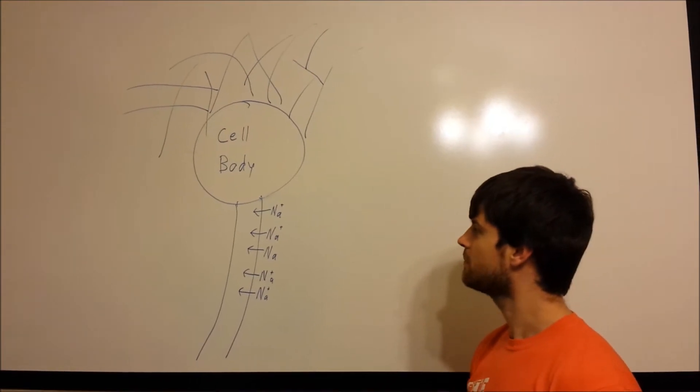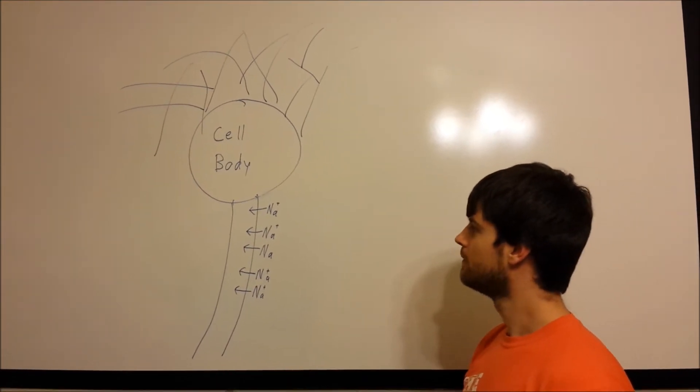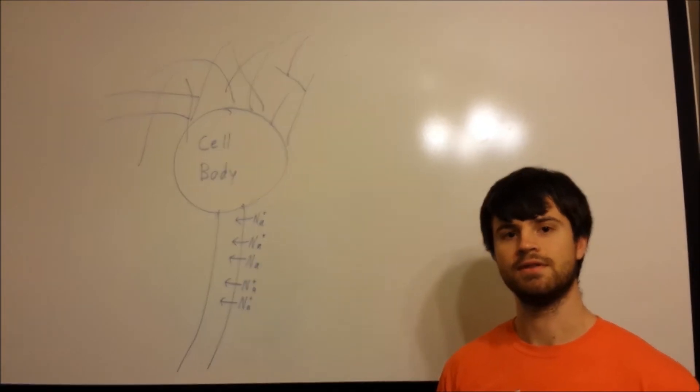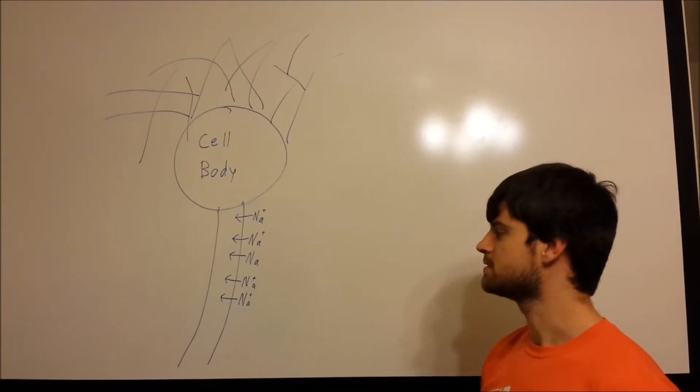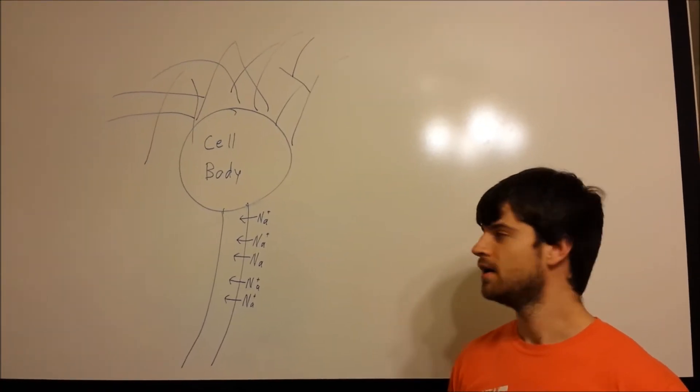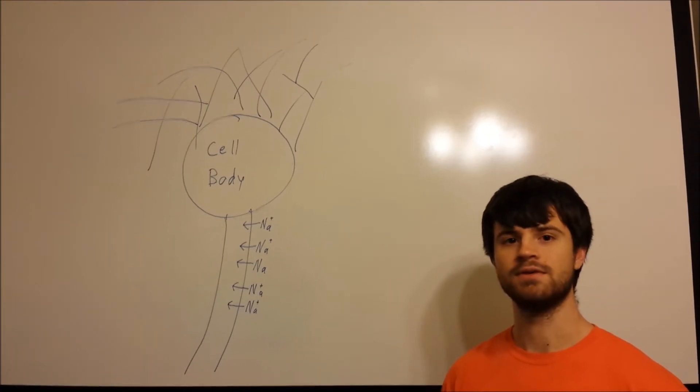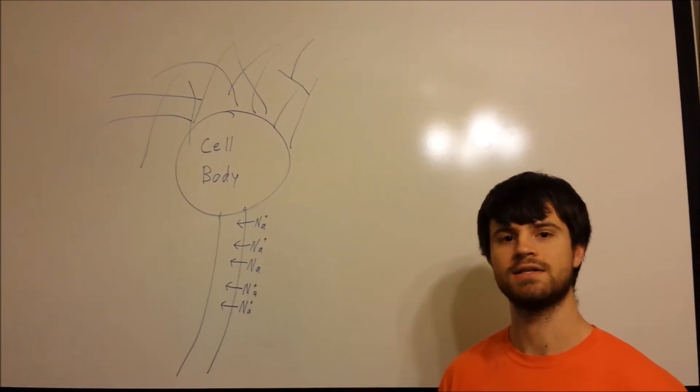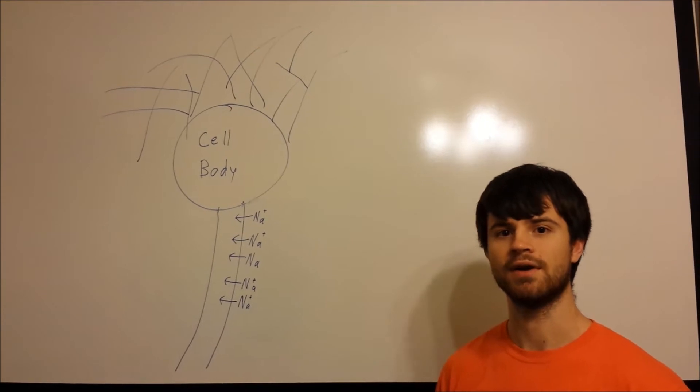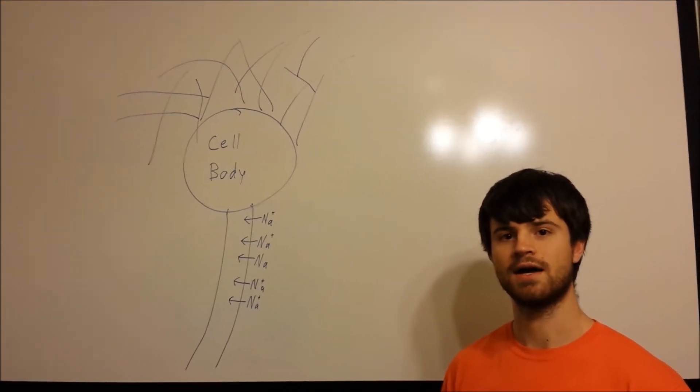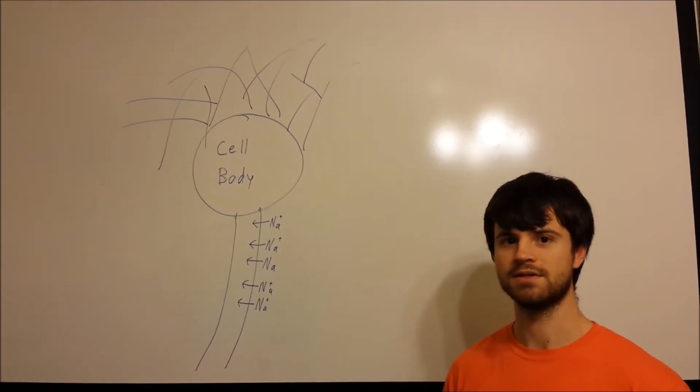So when an action potential is propagated through a neuron, sodium ions rush into the cell. And what this causes is a spike in the voltage signal. And using that spike, we're able to detect peaks, which tell us that our eye has either moved to the left or to the right. And that will tell the slide whether to move forward or backwards in the presentation.